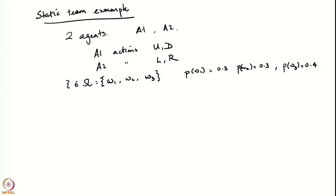The cost function or loss function in this static team problem is of the form L of u1, u2, comma psi. I need to write out the value of L for every value of the action and every value of psi. For each value of psi I have four different possible combinations for the values of the actions, since u1 and u2 can each take two different values. I will write this out in matrix form.